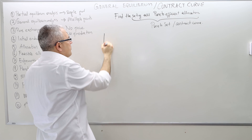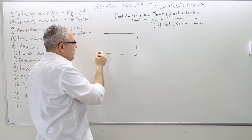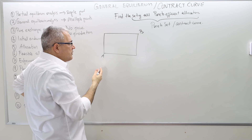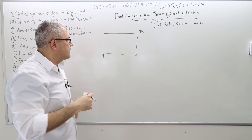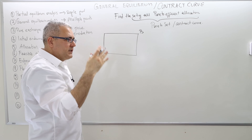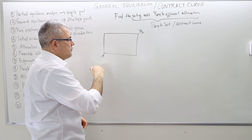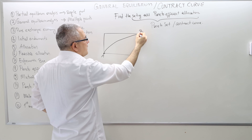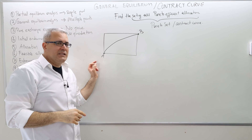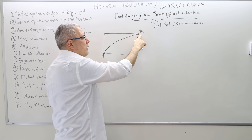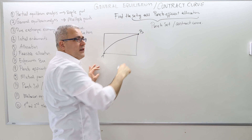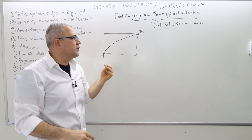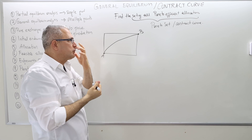In an Edgeworth box, in any exchange economy, agent A is located here and agent B is located here. Depending on the indifference curves — if they have nice convex indifference curves, as in the Cobb-Douglas utility function — the contract curve is going to be a curve connecting the point where agent A gets nothing and B gets everything, to the point where agent B gets nothing and A gets everything. Everything in between, according to some curve, is also Pareto efficient, and all those points are called the Pareto set or contract curve.